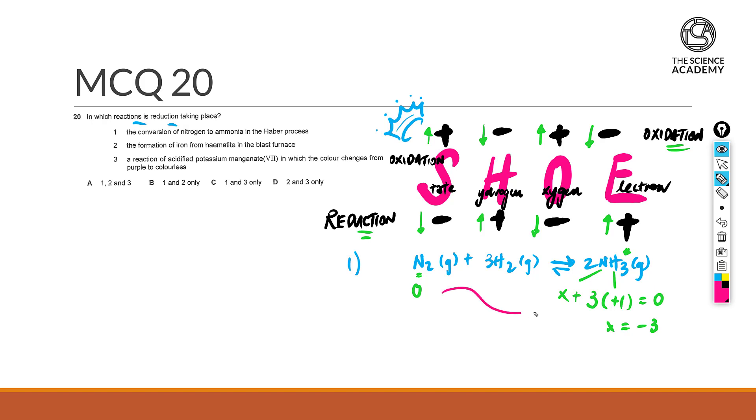And definitely moving from 0 to minus 3, we see that there is a decrease in oxidation state. And based off SHOE, an act of decrease in oxidation state is seen to be as that of a reduction event. So option 1 is true.